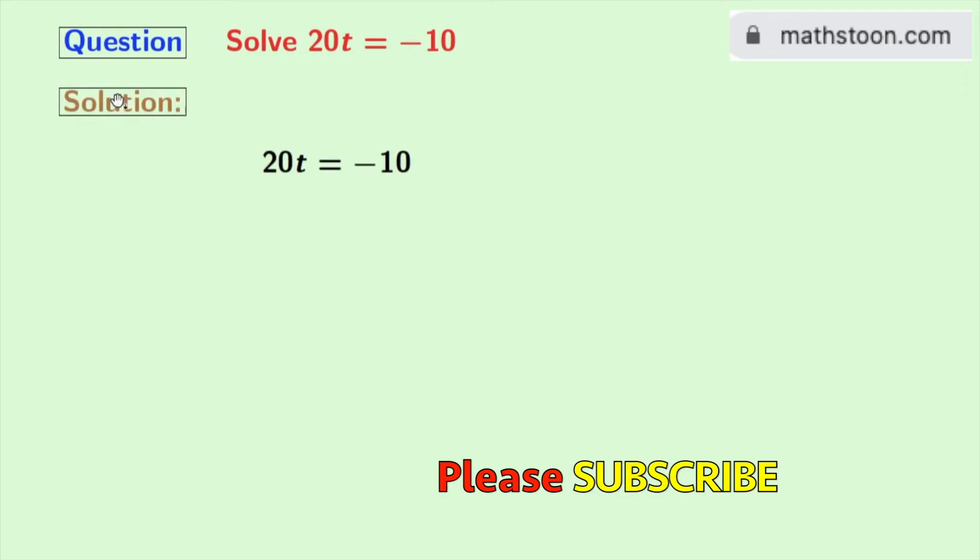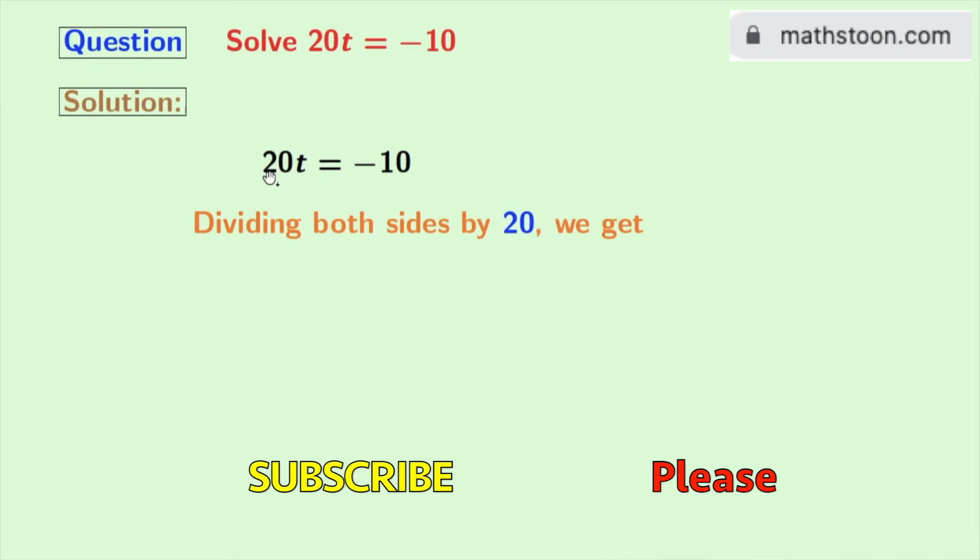Now let's start. This is our given equation. Look that the coefficient of t in the left-hand side is 20. So we will divide both sides by 20.